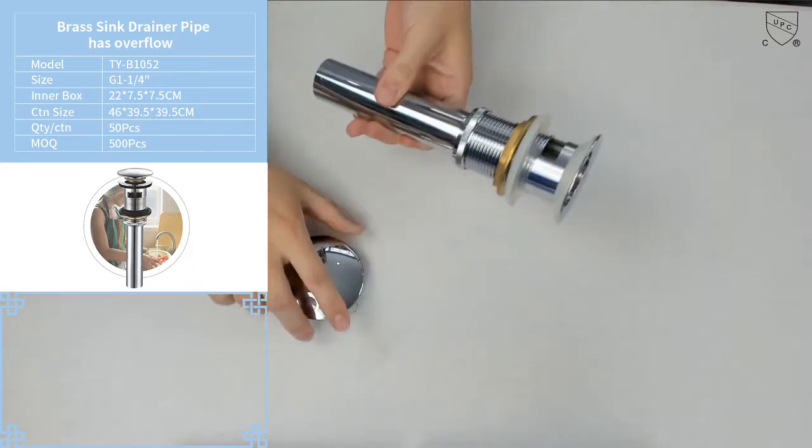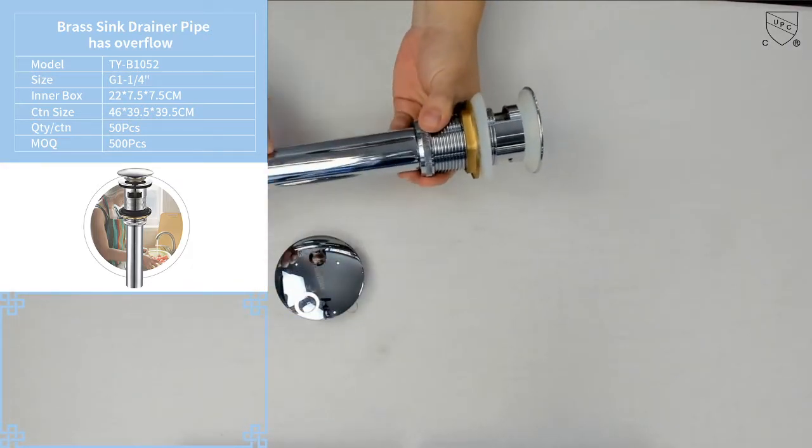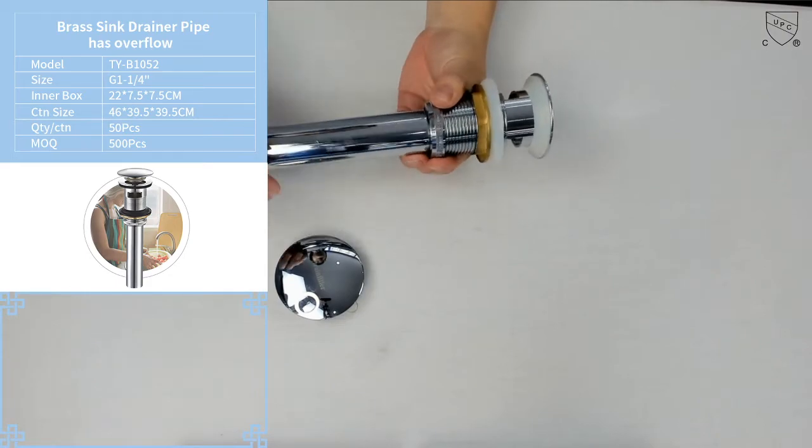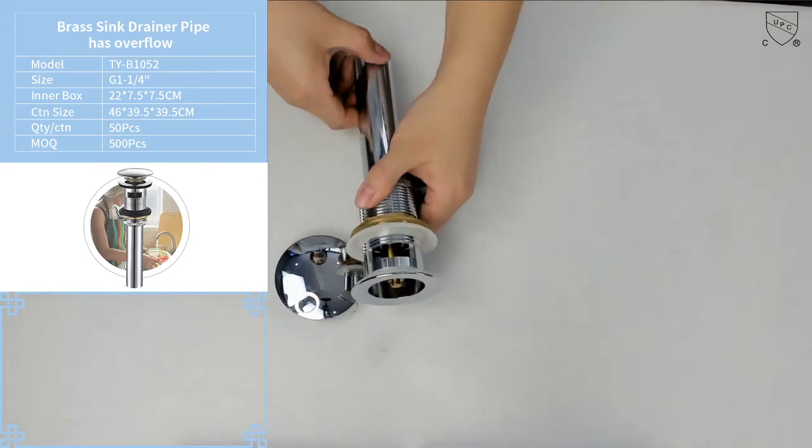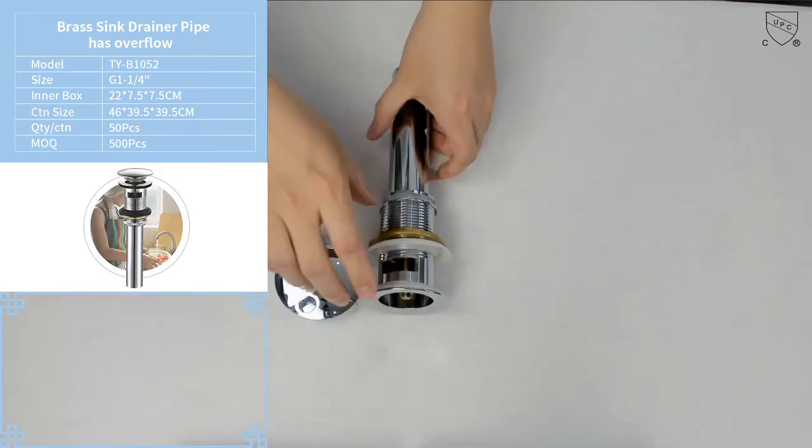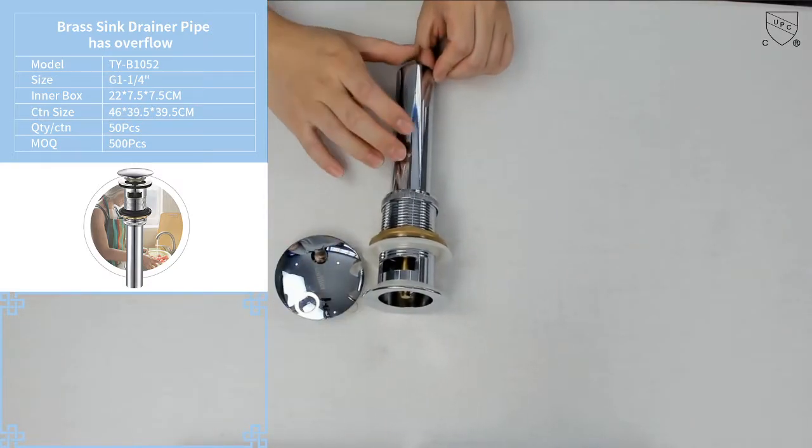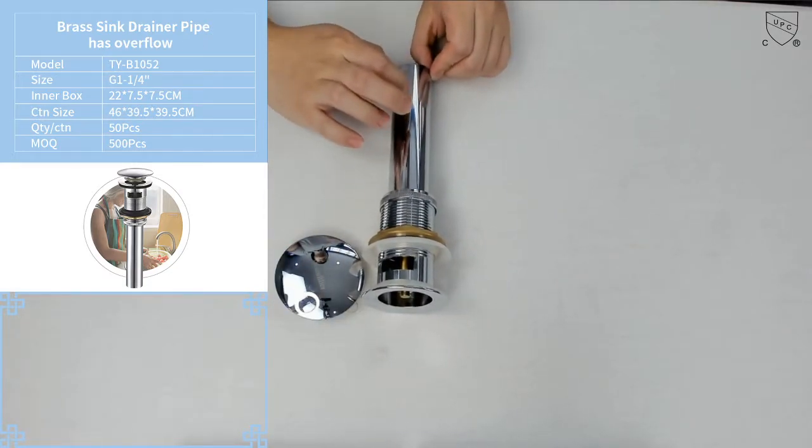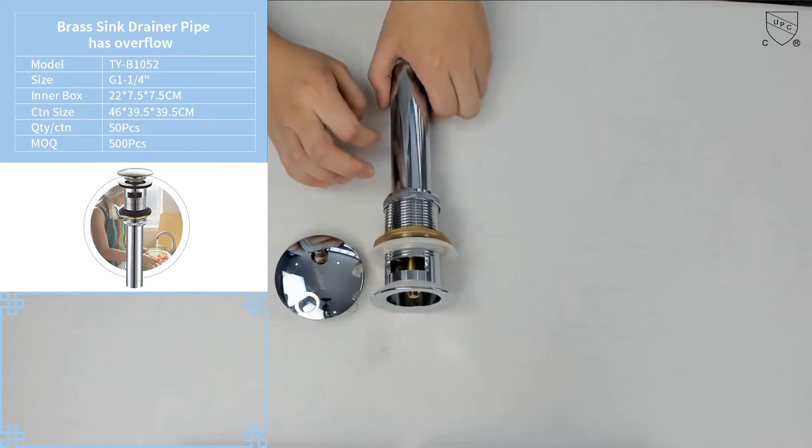Then you can see the pipe. This is 12 cm. And the thickness is 0.6 mm. And the material is stainless steel.